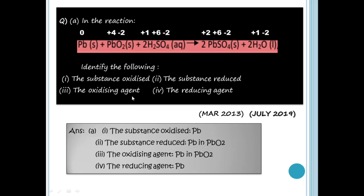The oxidizing agent is the substance that is reduced, and the reducing agent is the substance that is oxidized. So PbO2 is the oxidizing agent, and Pb (free state) is the reducing agent. This was from the July 2019 and March 2013 exam questions.